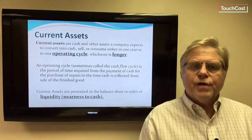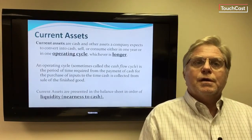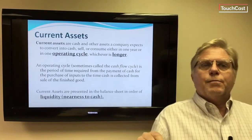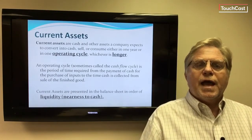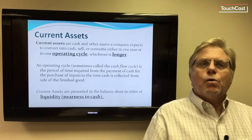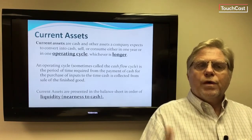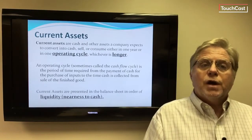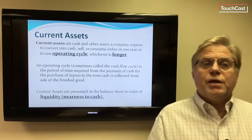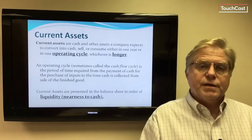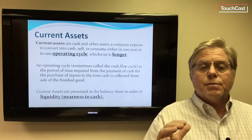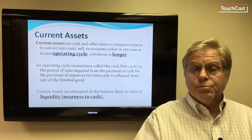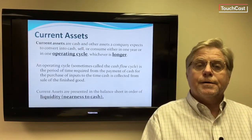The operating cycle comes into play in defining current assets because assets are classified as current if the company expects to convert them to cash or consume them within one operating cycle or one year, whichever is longer. Current assets are presented in order of liquidity: cash comes first, then perhaps marketable securities or short-term investments, then accounts receivable, inventory, and so on.